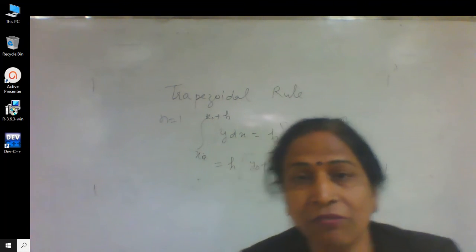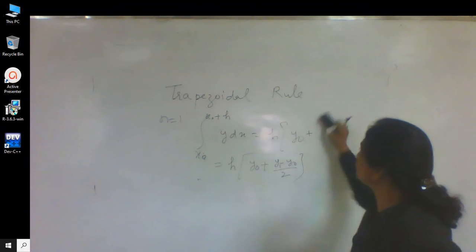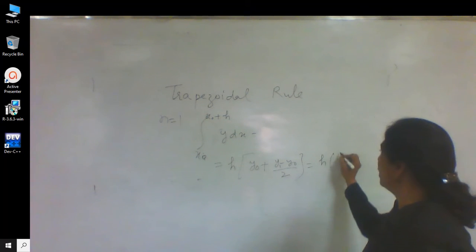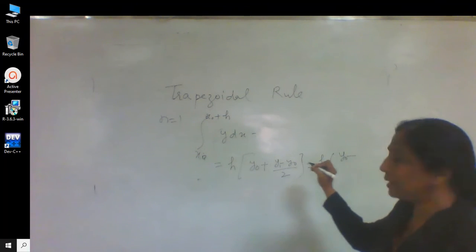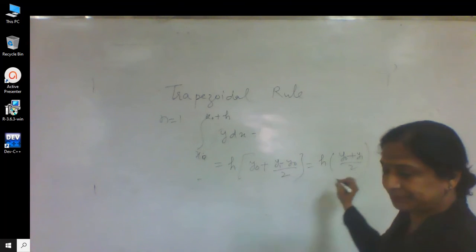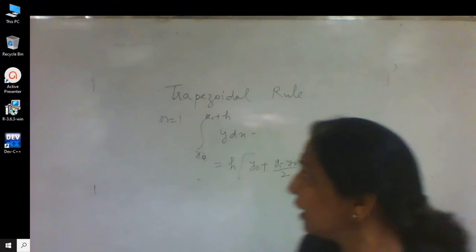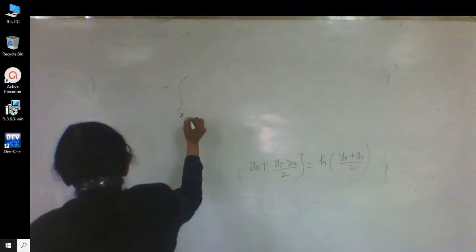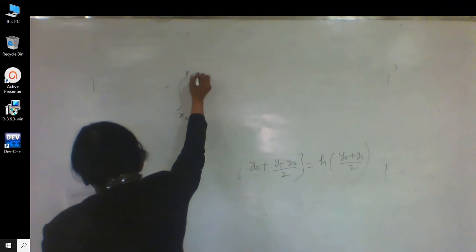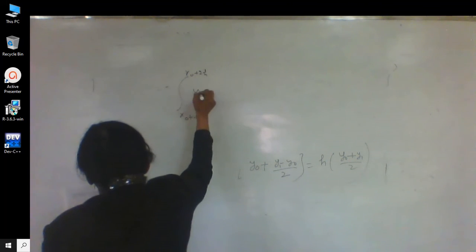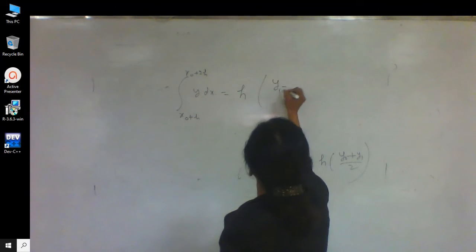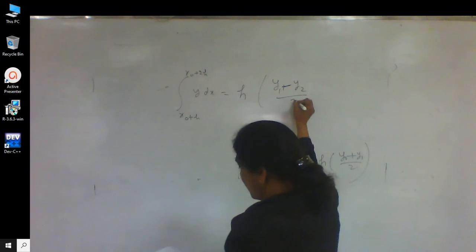This will be equal to h into y naught plus (y₁ minus y naught) divided by 2, which simplifies to h into (y naught plus y₁) divided by 2. Similarly, the integral from x naught plus h to x naught plus 2h of y dx is equal to h into (y₁ plus y₂) divided by 2.